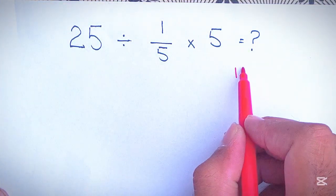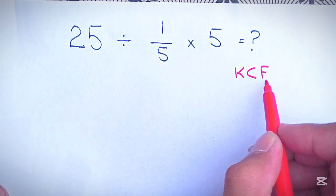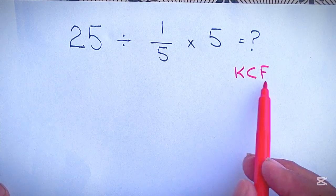So as we know the rule of KCF: K stands for keep, C stands for change, F stands for flip. Keep the first, change the sign, and flip the second fraction.